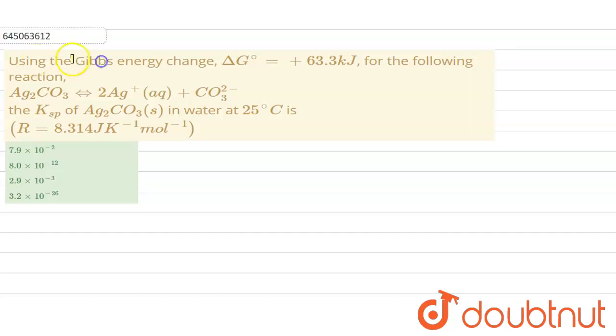it is given that using the Gibbs free energy change, delta G, that is 63.3 kilojoules for the following reaction: Ag2CO3 gives 2Ag+ and CO3 2-. We have to find out Ksp at 25 degrees Celsius.